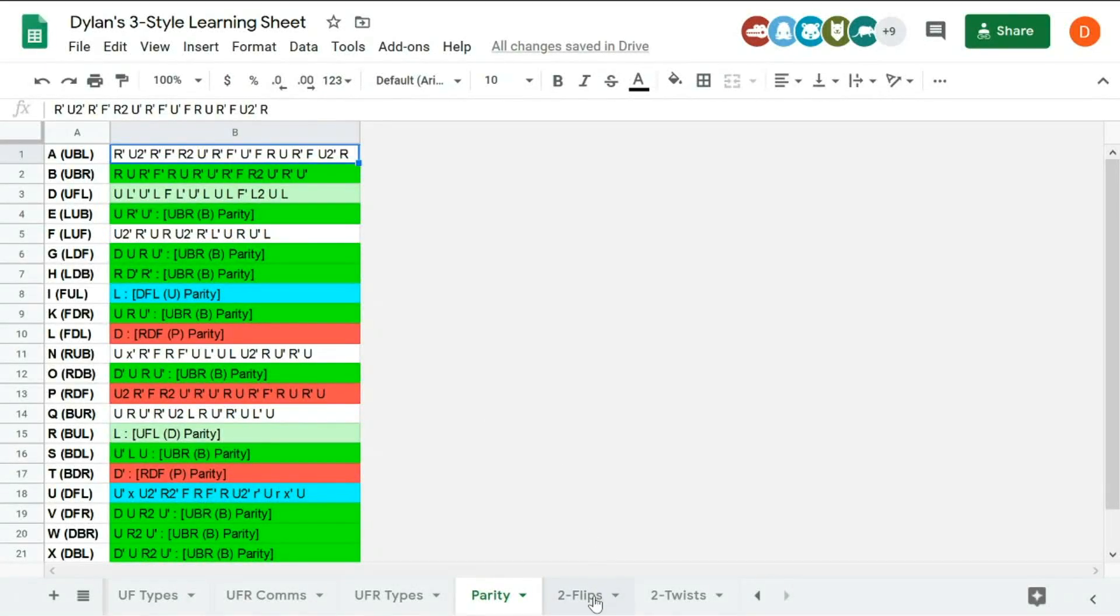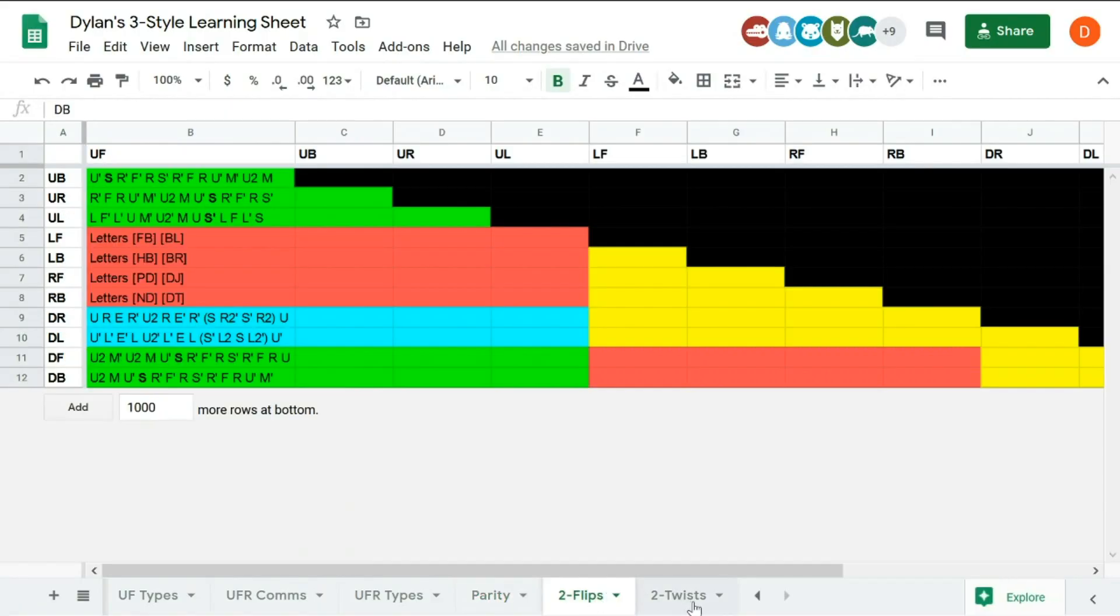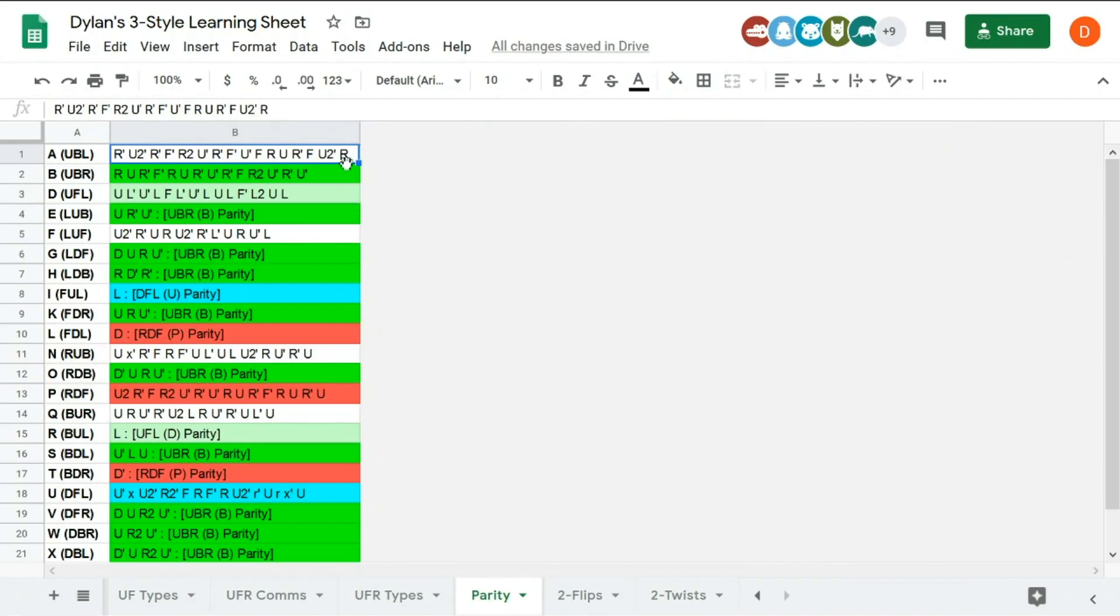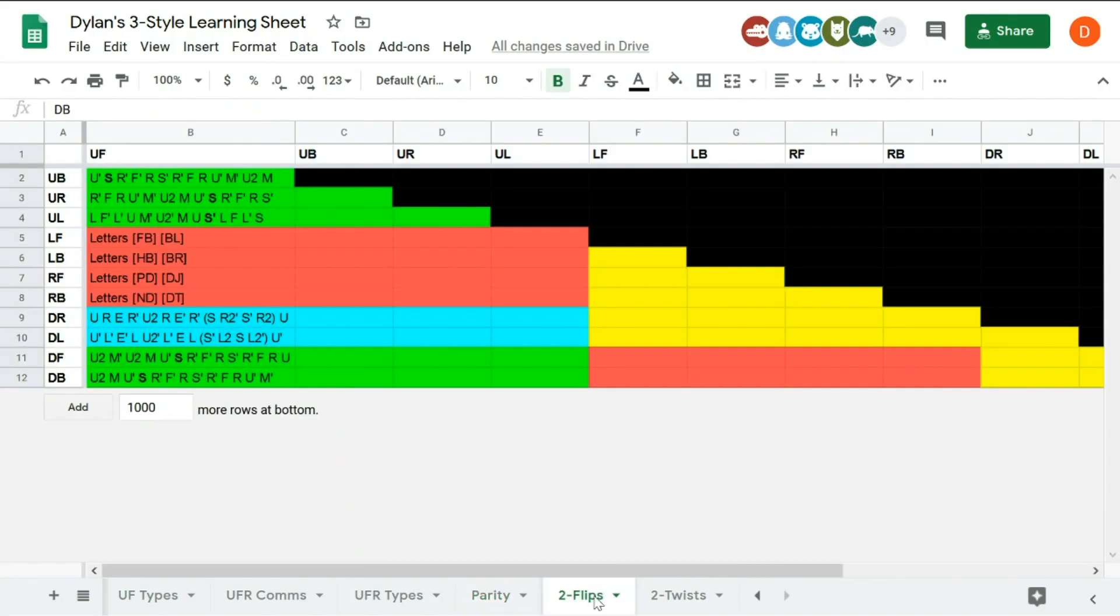In the description, I have the 3-style learning sheet, this time updated with corner twists and edge flips and parity algs. The parity part will be really useful because some of them are just algs and I won't show them in this video. But for corner twists and edge flips, this video will contain it all.